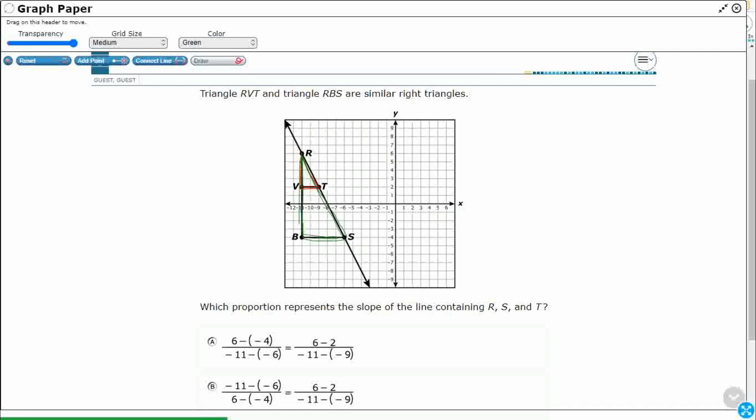So which proportion best represents the slope of the line containing R, S, and T? So we're looking for this line right here. It's this diagonal line right there. And we're looking for the slope, and they give you the RVT and the RBS.